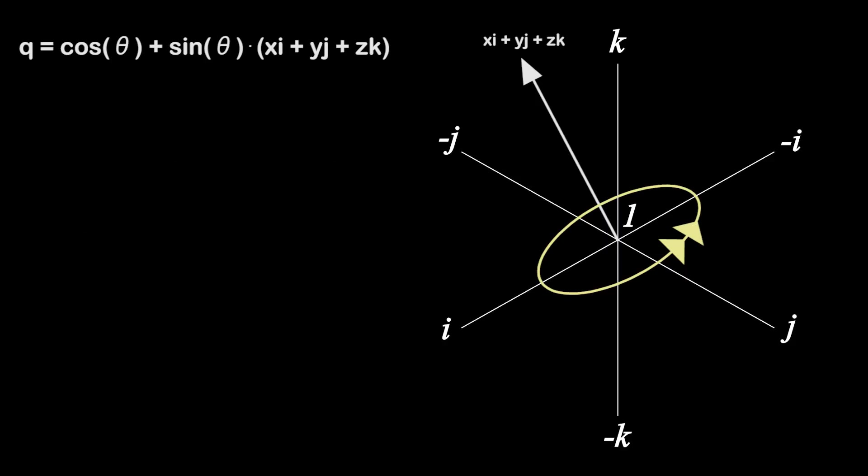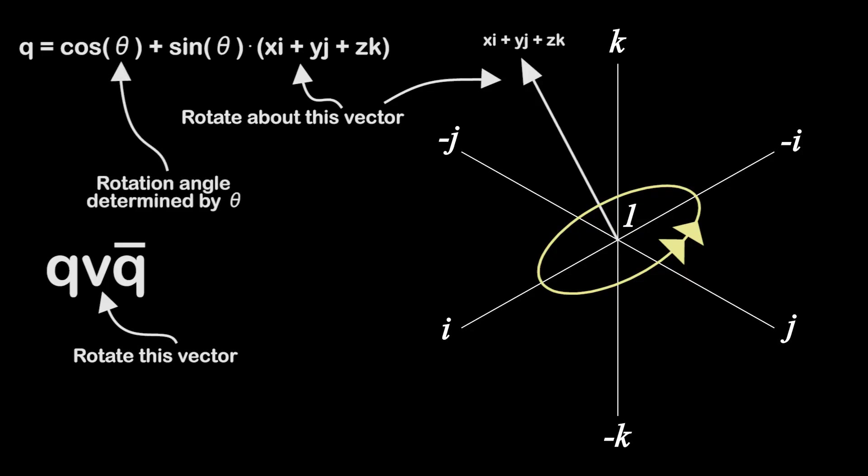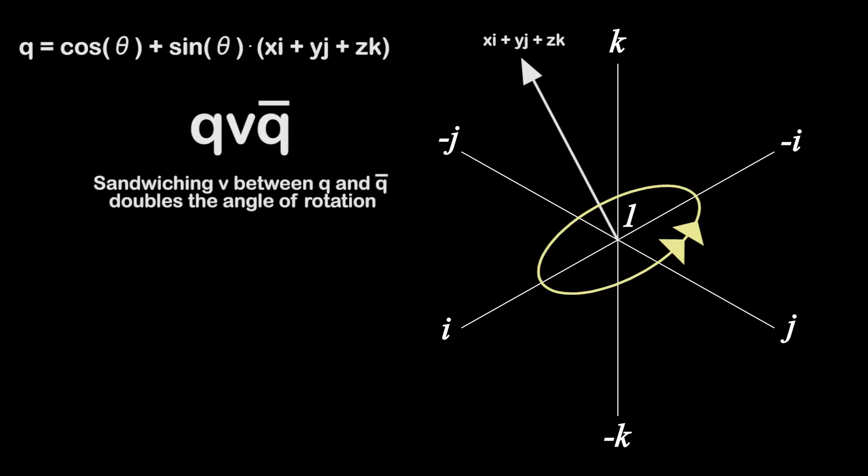So the vector which we are rotating about is given by the vector part of q, and the vector which we want to rotate is given by v. Much like complex number multiplication, the angle that we want to rotate is given by theta in this expression. But there's a catch. Since we sandwiched v between q and q conjugate and end up doubling the rotation about the vector part of q, we actually end up rotating v by two theta degrees.